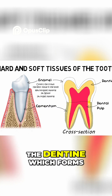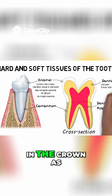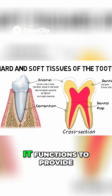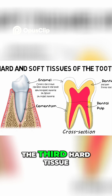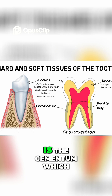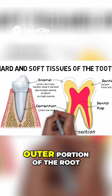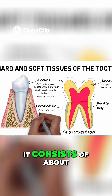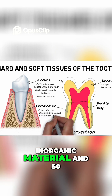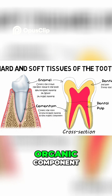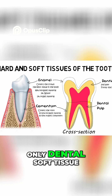The next layer is the dentine, which forms the bulk of the tooth and is present in the crown as well as in the root. It functions to provide support to the enamel. The third hard tissue is the cementum, which covers the outer portion of the root. It consists of about 45 to 50 percent inorganic material and 50 to 55 percent organic component.